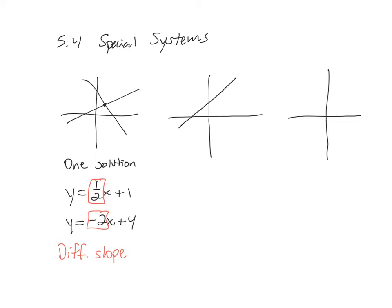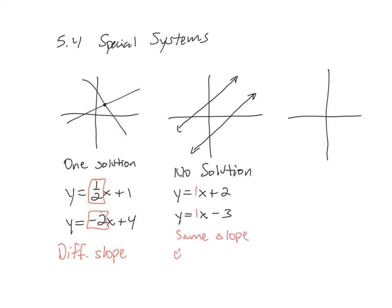We also have parallel lines, where the lines don't cross, giving us no solution. For example, y equals x plus 2 and y equals x minus 3. On parallel lines, the slopes are the same — both are 1 here — but the y-intercepts are different: positive 2 versus negative 3.